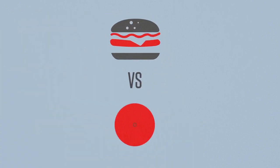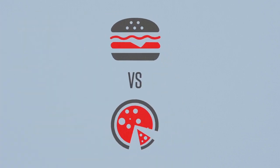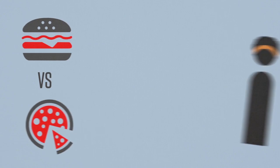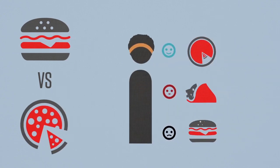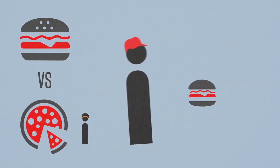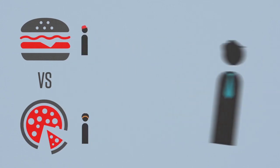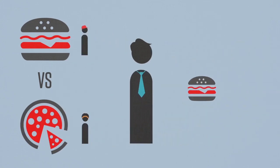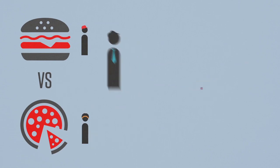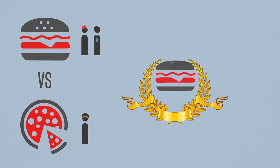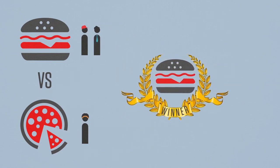So to make him happy, you agree to have one last vote: burgers versus pizza. You, of course, vote for pizza. Jim votes for burgers like you expected, but now John also raises his hand in favor of burgers. So burgers are declared the winner.